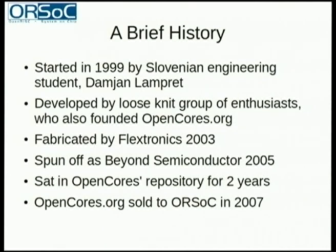A brief history: OpenRISK was started in 1999 as a university project by a Slovenian guy called Damian Lampret. Over the next couple of years they got it up and started a small community that developed peripherals for FPGAs. An FPGA — Field Programmable Gate Array — is a set of logic you can configure and reconfigure whenever you like, giving you programmable logic. They targeted it for FPGAs, but also did ASICs. In 2003, Flextronics got on board, funded a full ASIC flow, and they fabricated and demoed it — it was used in a couple of products. So it's proven in industry and in silicon.